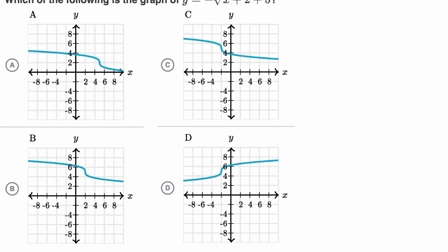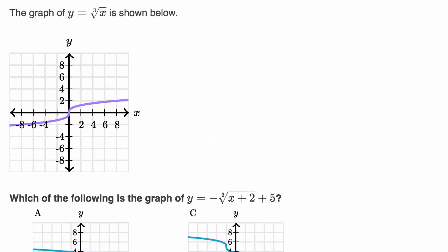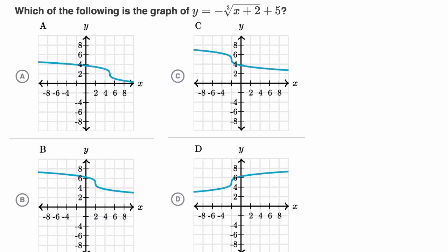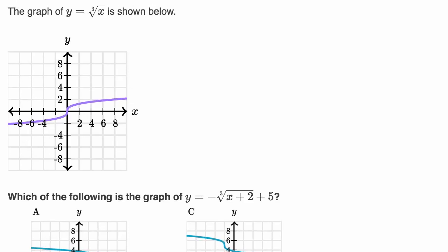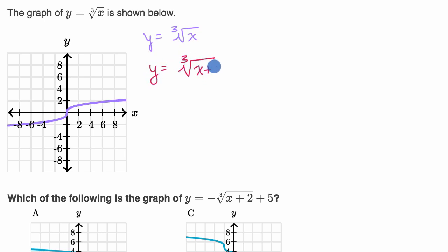Let's do another example. This is a similar question — now they graphed y equals the cube root of x, and they say which of the following is the graph of this expression, giving us choices again. Pause the video and try to work it out on your own before we do this together. Now let's work on this together using the same technique — I'm just going to build it up piece by piece. This is already y equals the cube root of x. So now let's build up on that — let's say we want to have x plus two under the radical sign. Let's graph y equals the cube root of x plus two.